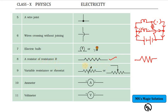When the resistance value can be changed, it is called a rheostat or variable resistance. Zigzags with an arrow are used to represent variable resistance.